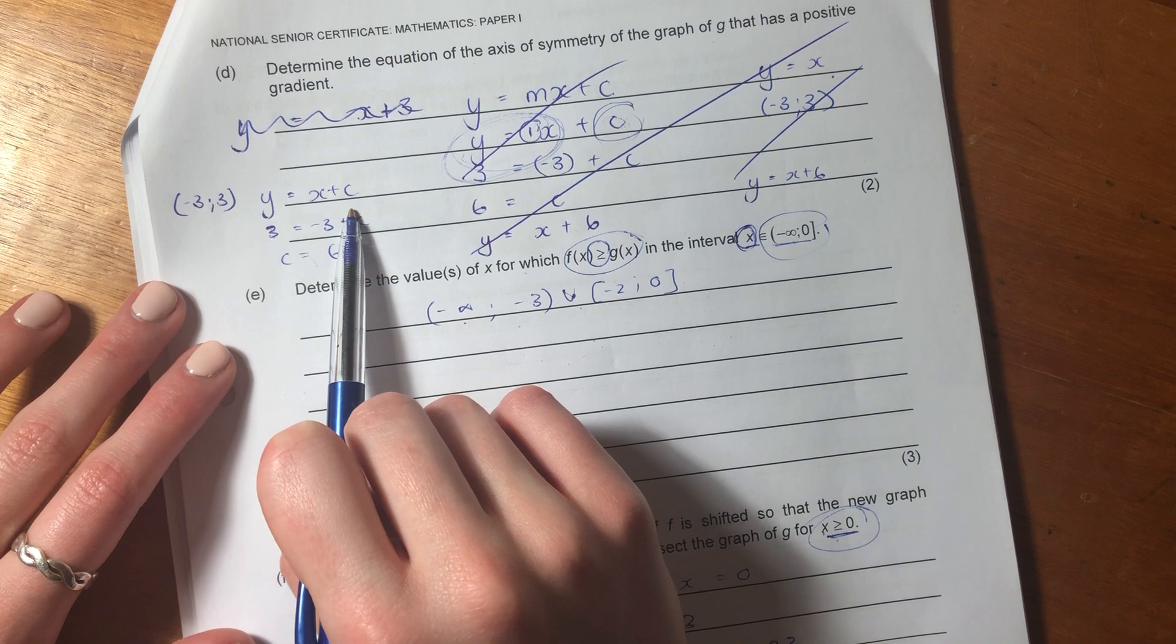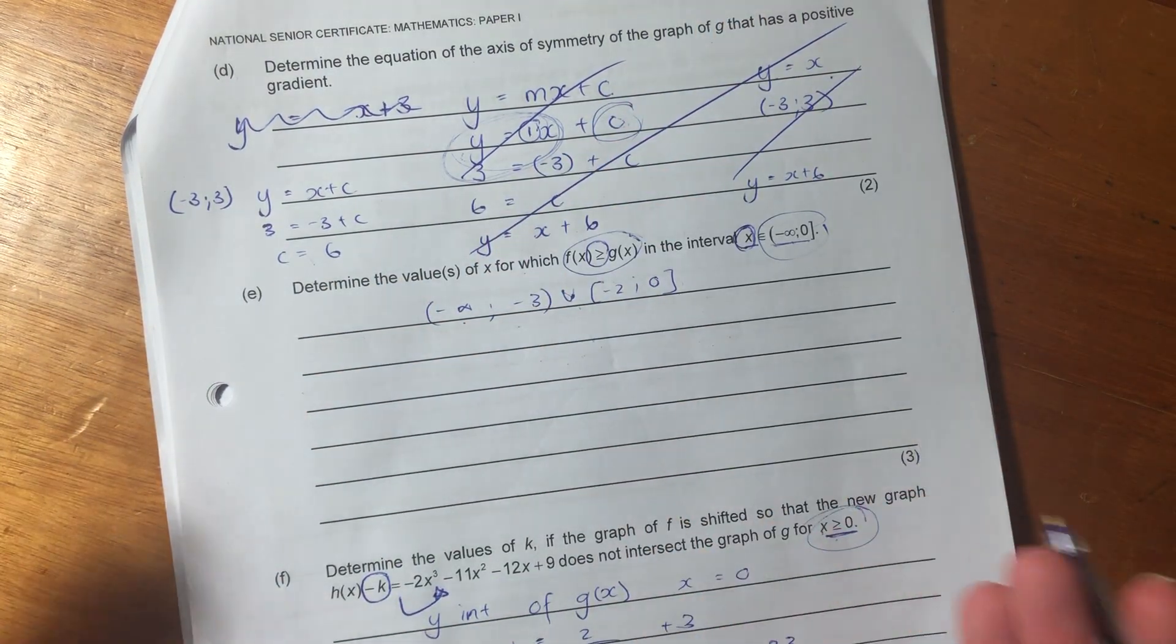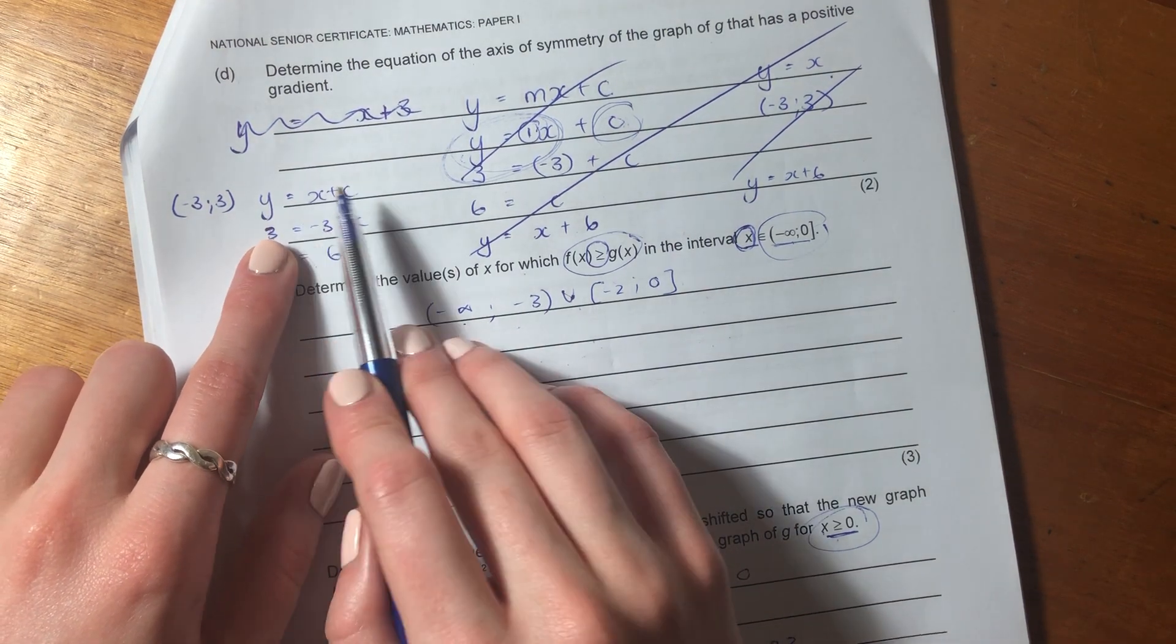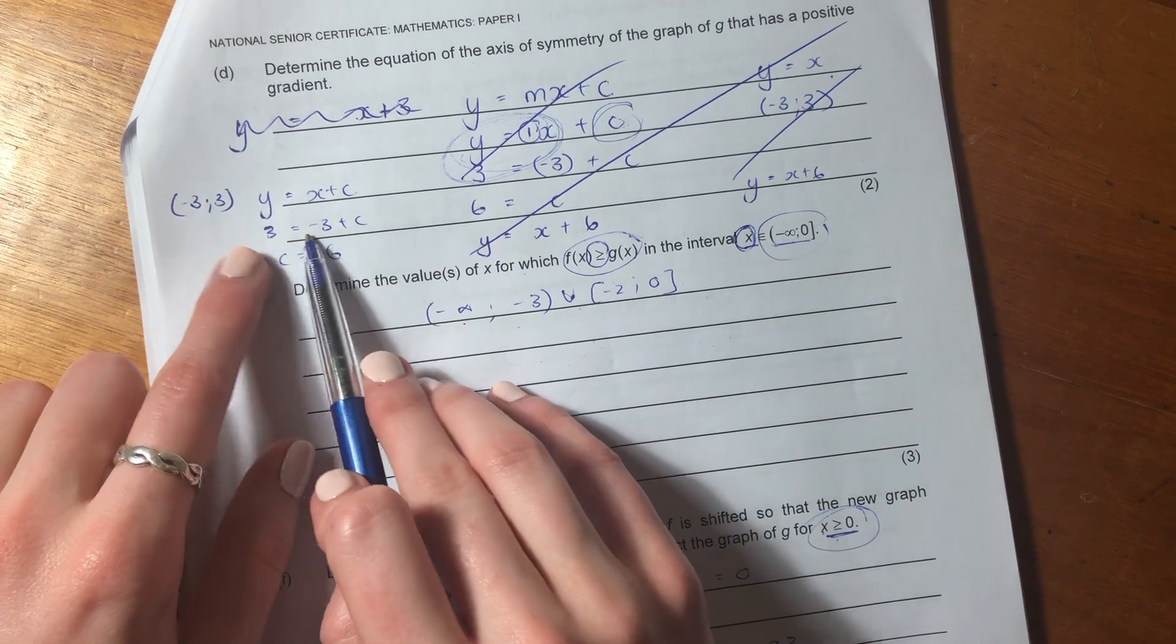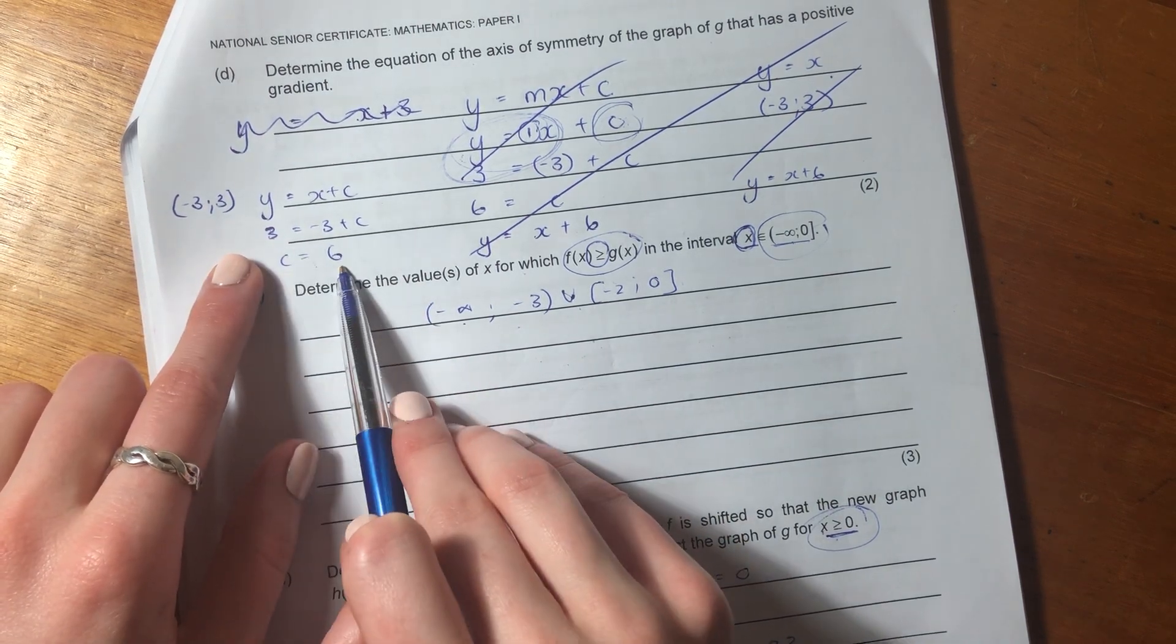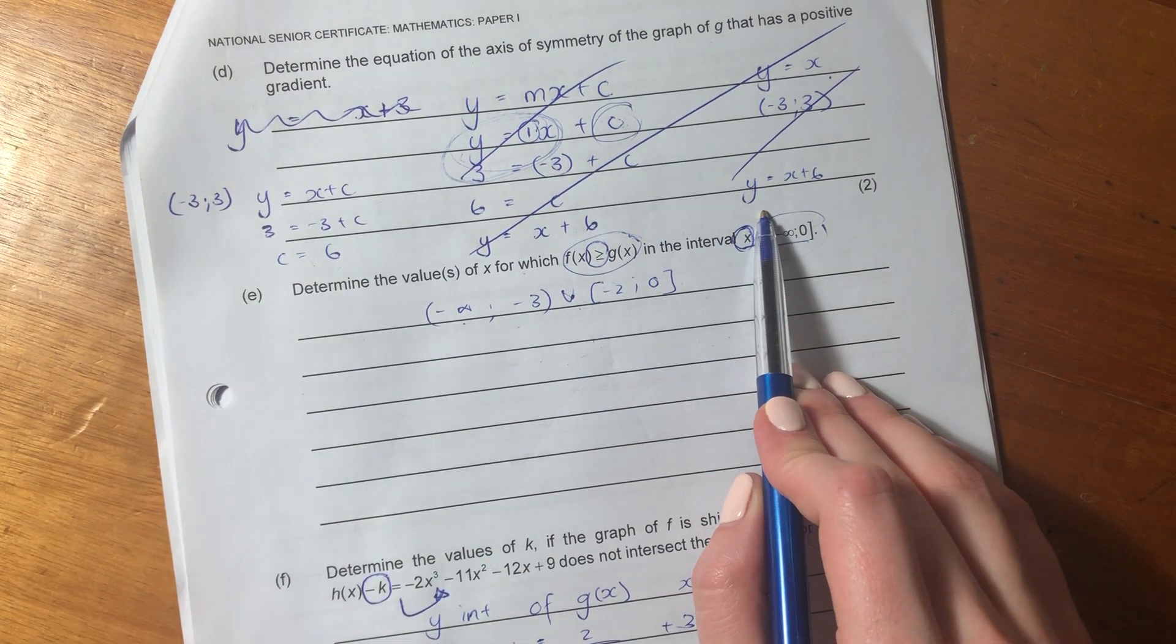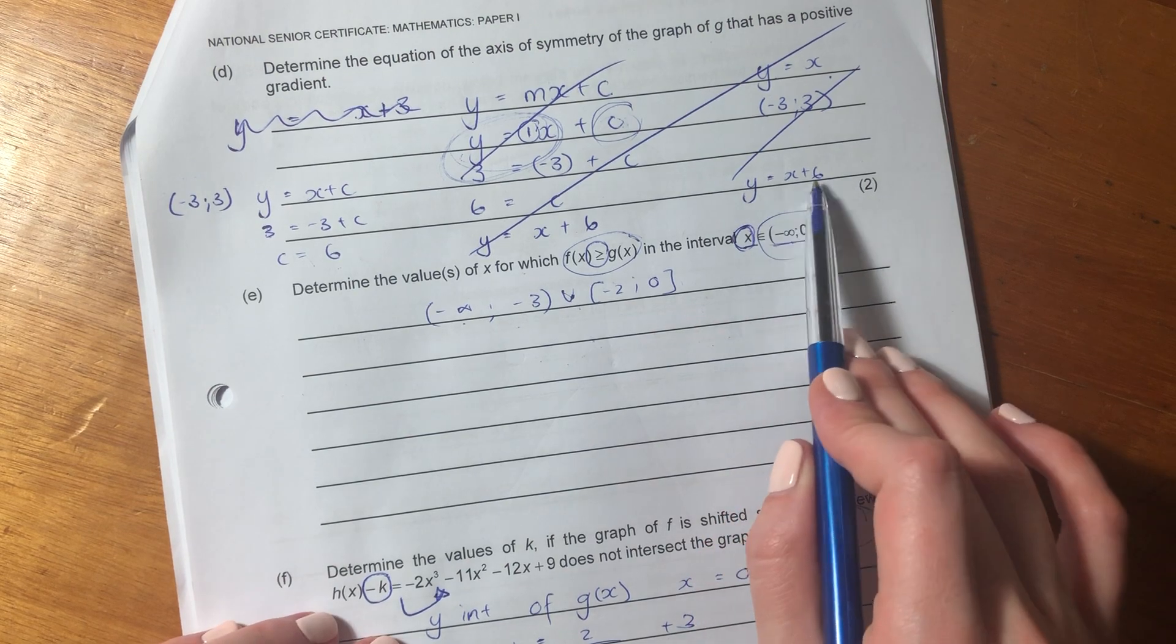And we can then get the general equation for that line. So you've seen here, I've written that origin point, that point that it goes through. I've said Y equals X plus C. Now, you could be saying, well, what about the gradient? But the gradient of that axis of symmetry has not changed. The gradient is still 1, but it's just the shift, the C, that we don't know. So sub in the point, negative 3 and 3, which I've done, and then you get C equals 6.